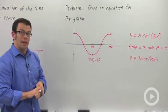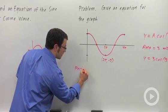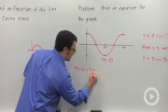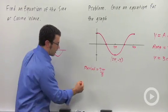Now if the period is 4 pi, I can use this formula for period to find out what b is. Plug in 4 pi for the period.